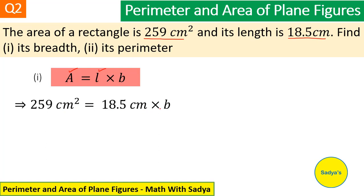Now, since we have to find breadth in first part, with breadth, 18.5 is being multiplied. When it goes to the other side, it will be divided. So, 259 cm square over 18.5 cm and I have written b on this side, on the left hand side of the equal sign.